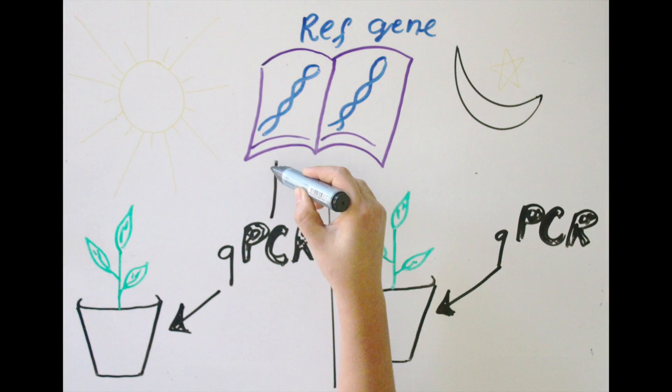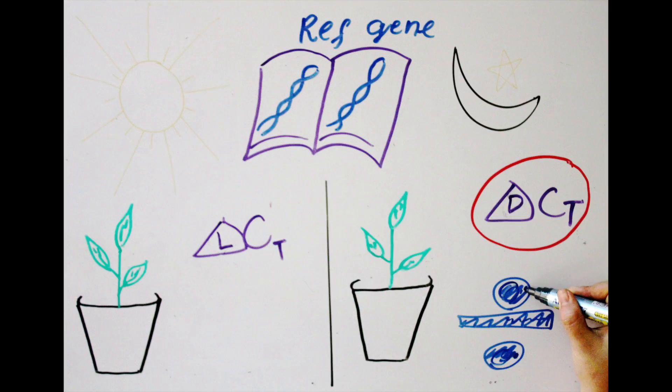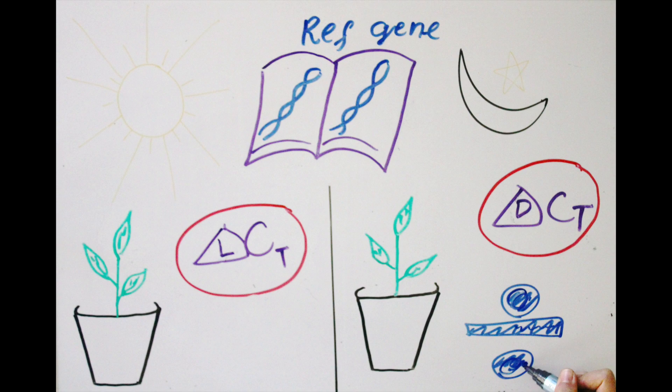You then perform qPCR on both your samples and the reference gene. Find out the difference between the two CT values, delta CT, in each treatment. Now the ratio of the two delta CTs tells you how much gene expression has changed.